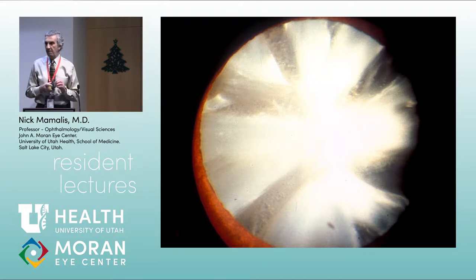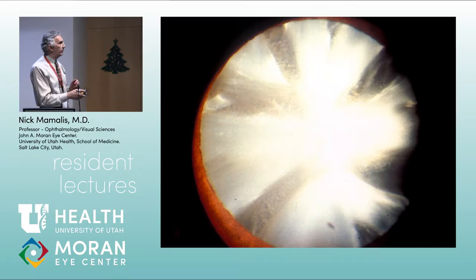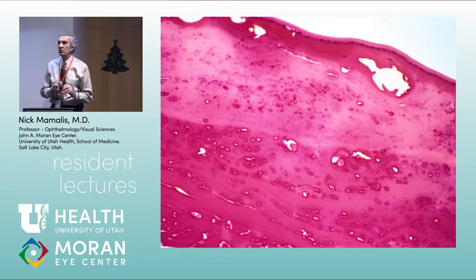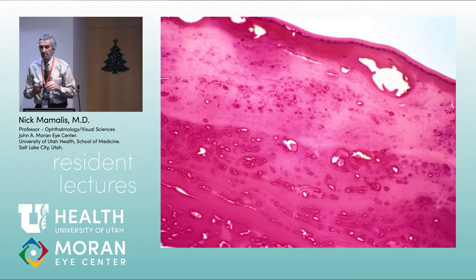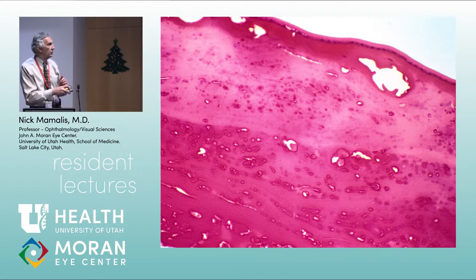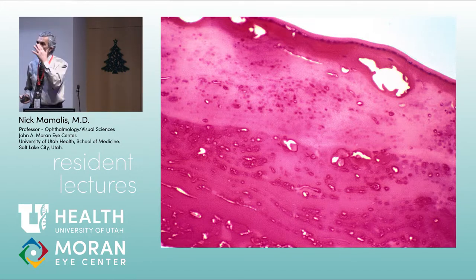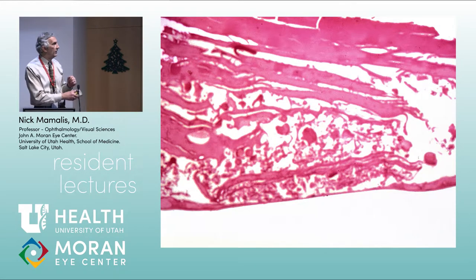This is a cortical cataract — you see the spokes or pie-shaped opacities coming from the periphery toward the center, and looking from behind you again see the pie-shaped spokes. What's different about cortical cataracts versus nuclear cataracts is that they actually liquefy. In surgery you can sometimes see the cortical fibers under the anterior capsule as little dots that move to the side when you push on the capsule, because they're actually liquid. Cortical cataracts involve not only opacification but liquefaction of the cortical fibers.